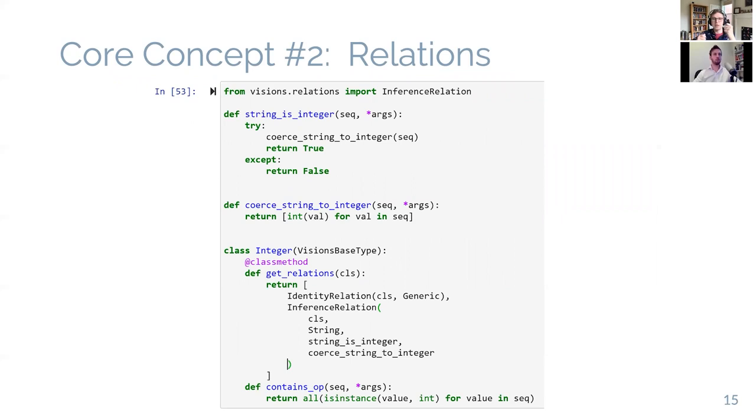So that also inherently produces two possibilities. We might either do that without transforming the underlying data in the case of generic becoming string, or we might have to change the underlying data in case of string becoming integer. That difference is the difference between what visions calls an identity relation and an inference relation. So identity relations, no change to the data, no transformation. Inference relations do require a change. So here we have the example of an integer, and we have a relationship between integer and string that requires a conditional mapping. So first, there's a test whether that transformation is applicable. We might attempt the coercion. If it succeeds, then we would say it is. And second, a transformation, which actually modifies the underlying data.